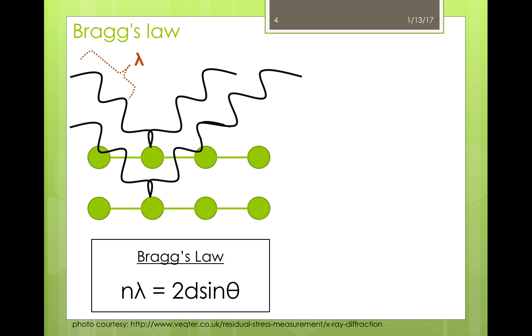The wavelength is denoted with lambda and is proportional by an integer n to two times the spacing between the planes, d, which is multiplied by the sine of the diffraction angle, theta.